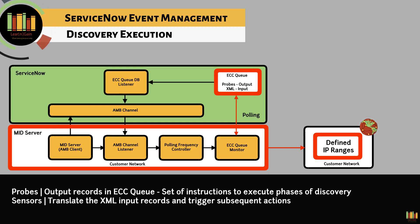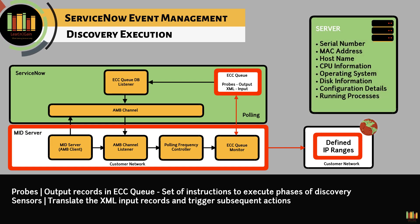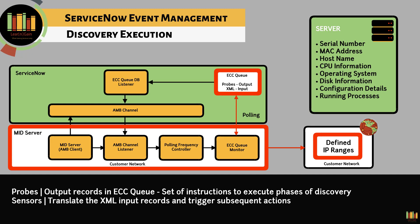The responses are returned as input records in XML format back in the ECC queue. The sensors then parse the required information and update the CMDB. For example, when discovering a server, its serial number, MAC address, host name, CPU information, operating system, configuration details, disk information, and all running processes are discovered and populated. The CI class manager will provide additional information on the class definition, identification, and reconciliation rules.